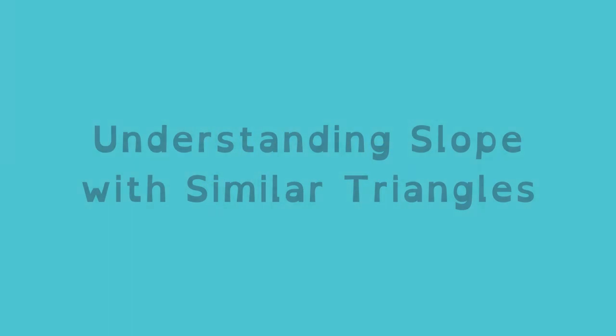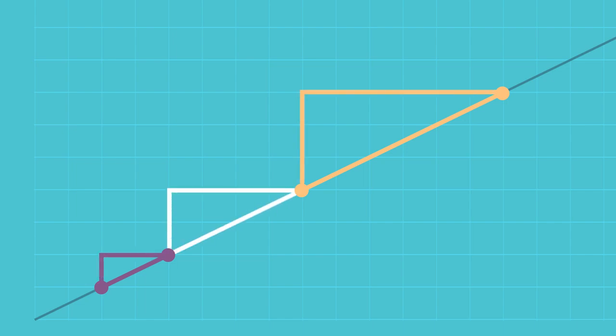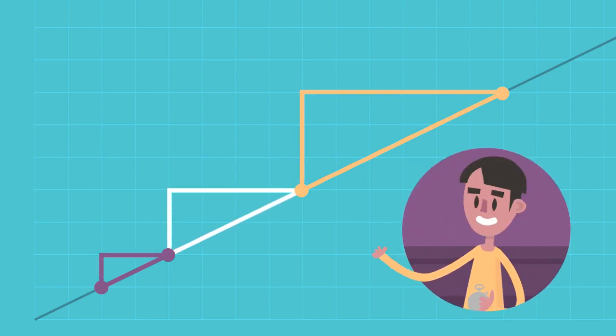Understanding slope with similar triangles. The slope or steepness of a non-vertical line is the same between any two points along that line. Similar triangles and Jason can help us understand why.